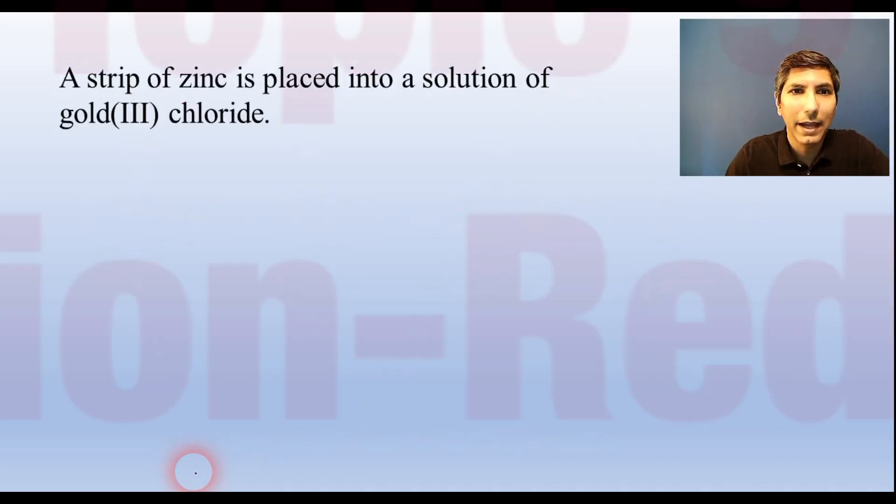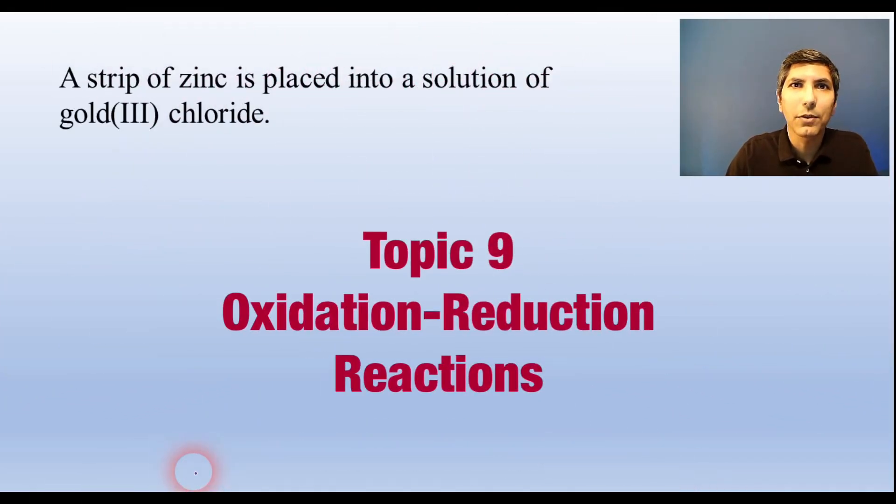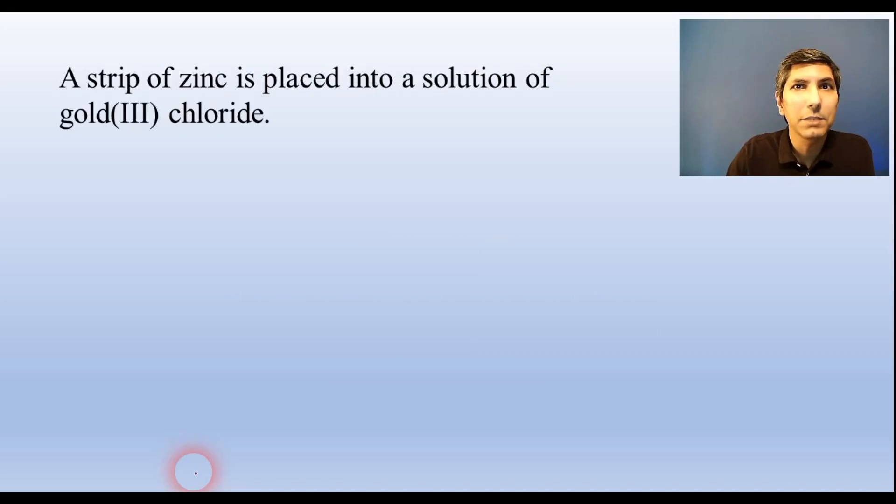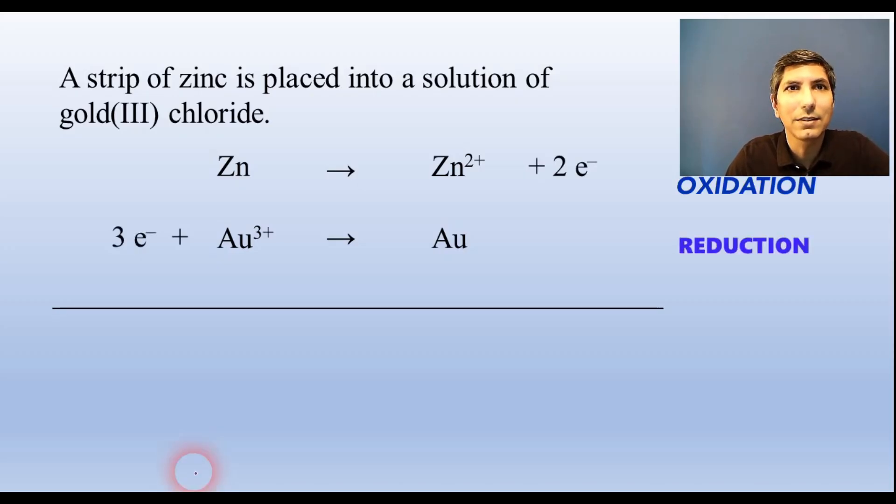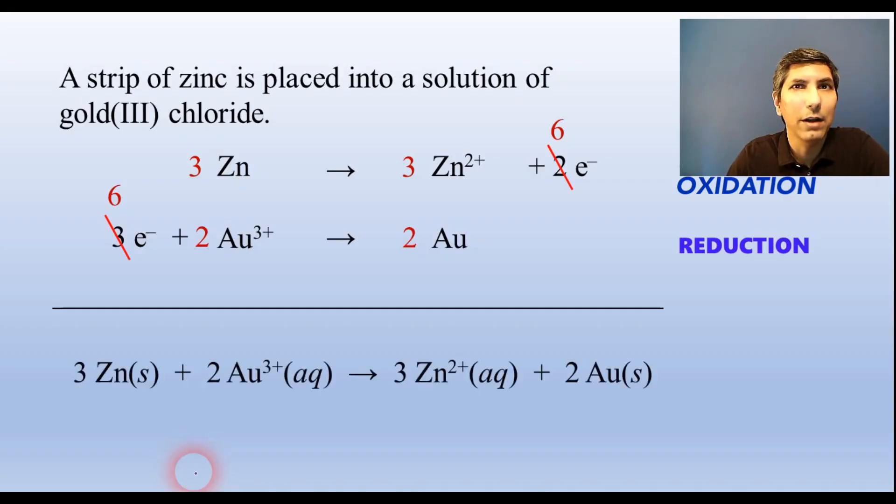We often write redox reactions into half-reactions to help us see where the electrons are going. So, in this process, zinc metal is being transformed into zinc two-plus ions, and gold three ions are being transformed into gold metal. We balance the charges with electrons, like this. Since zinc is going up in charge, we can say it's being oxidized, and since gold ions are going down in charge, we say it's being reduced. We need to get the electrons to cancel, so we multiply the half-reactions by 3 and 2, and add the two half-reactions to get the overall balanced equation. We can look at this and say that 6 electrons are being transferred in this process.